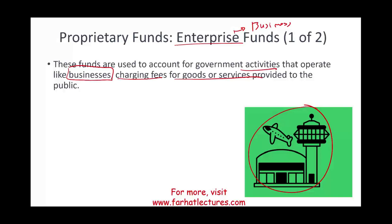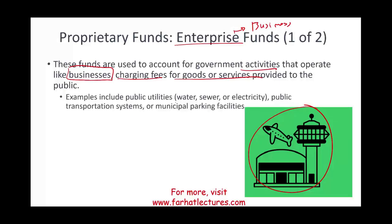You pay for your goods and services. Enterprise funds include water, sewer, and electricity. If the government is in charge of a public transportation system — for example, the Philadelphia International Airport or parking facilities maintained by the municipality — they will charge you fair market value. However, it's government-run. For example, in the state of Pennsylvania, all the liquor stores are operated by the state, which is an enterprise fund.